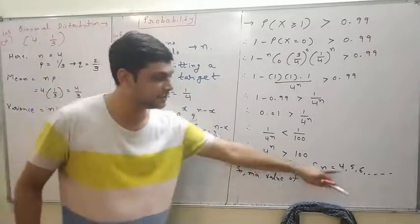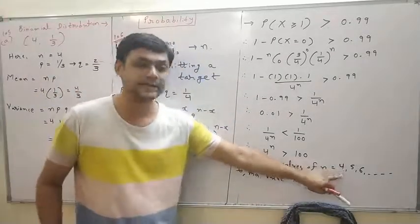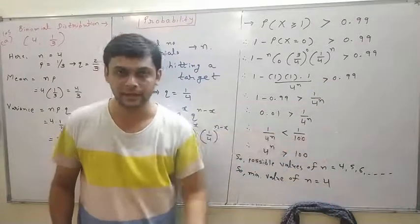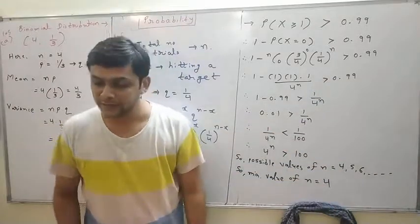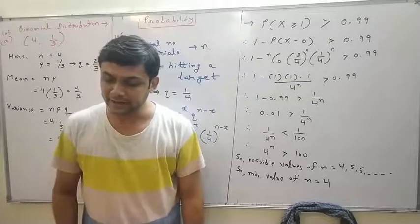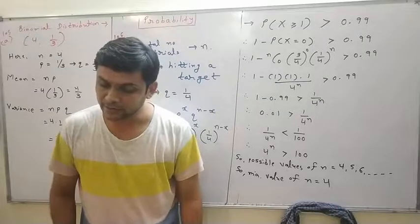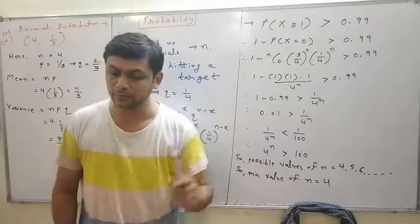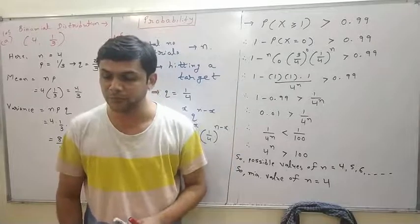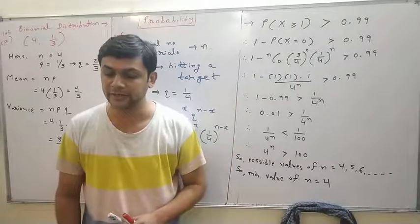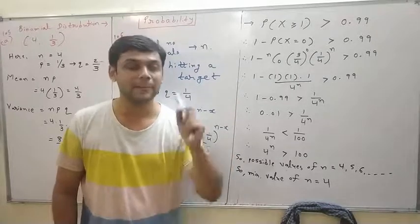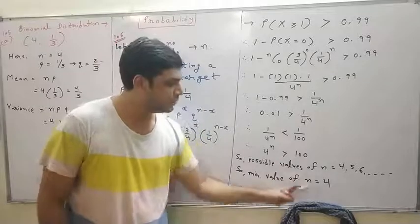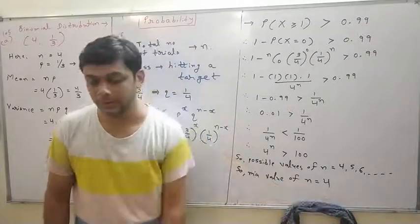You can take n equal to 4, 5, 6, 7, 8 or anything. But the question asks to find the minimum number of times he must fire so that the probability of hitting the target at least once is more than 0.99. So the minimum number is 4.